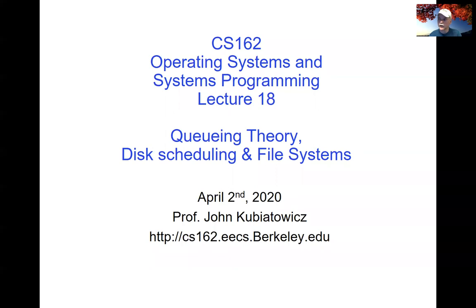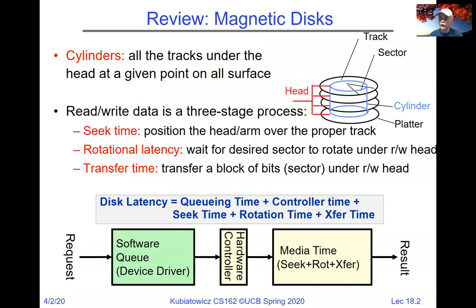Welcome back to CS162, everybody. We're going to pick up where we left off on Tuesday and tell you a little bit about queuing theory, then pile into some interesting things about file systems. First, I want to remind you what we talked about last time. We were talking about spinning storage — inside a disk drive there are a series of platters. There is a head which can move in and out to talk to different tracks. These platters have two sides, and there are heads on each side. A track is a circular path on one surface, and all of the tracks on top of each other are called a cylinder.